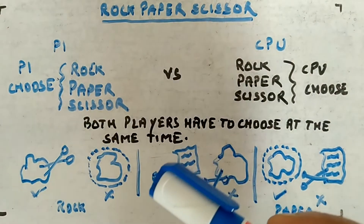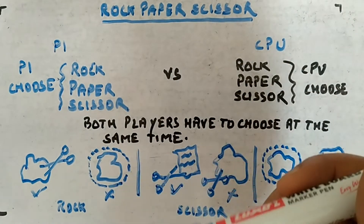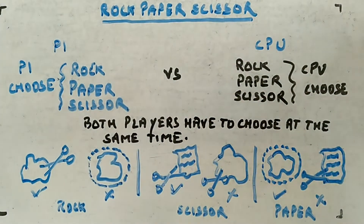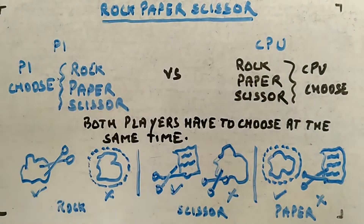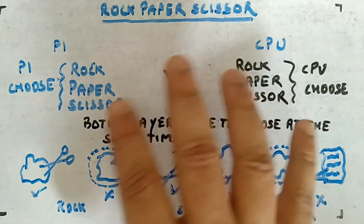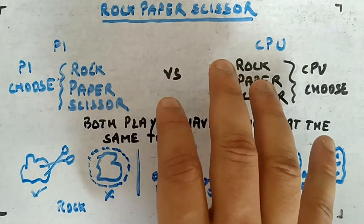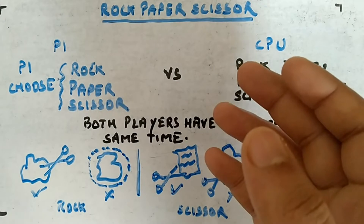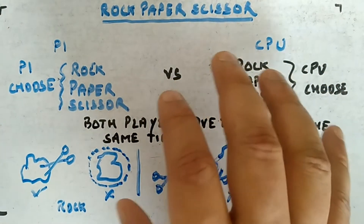In this video, we'll be implementing a rock paper scissors game in Python code. It's a small child's play, and a lot of people are not aware of what this game is.